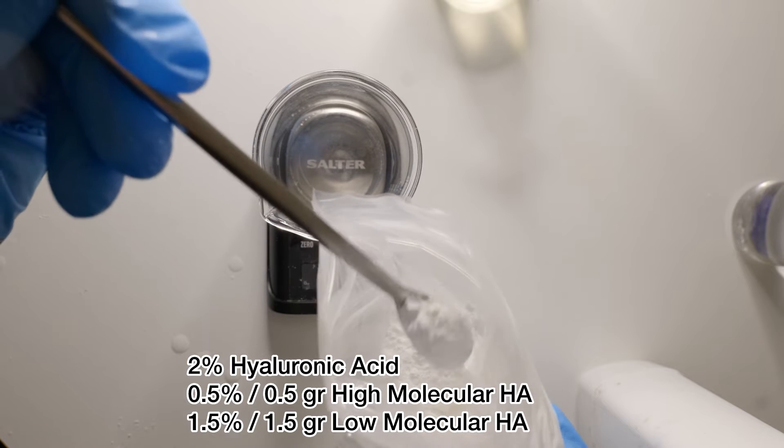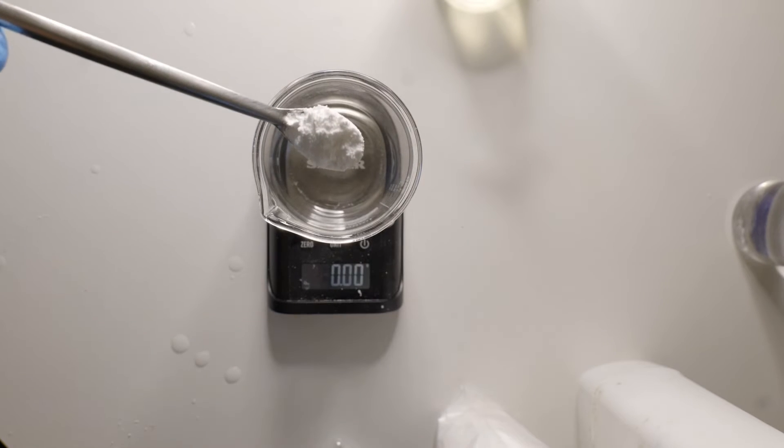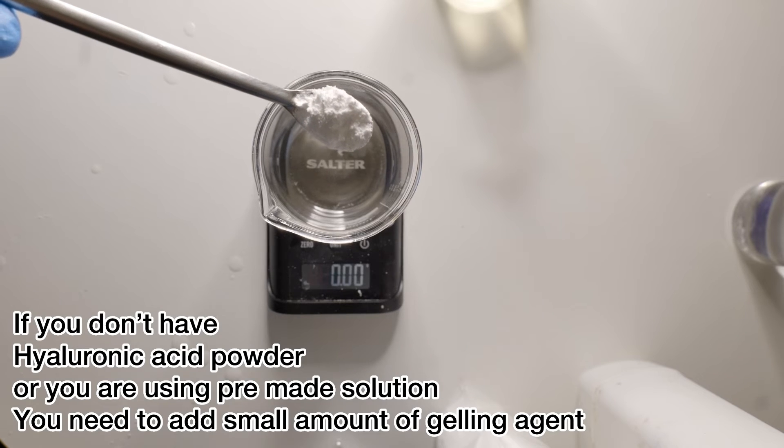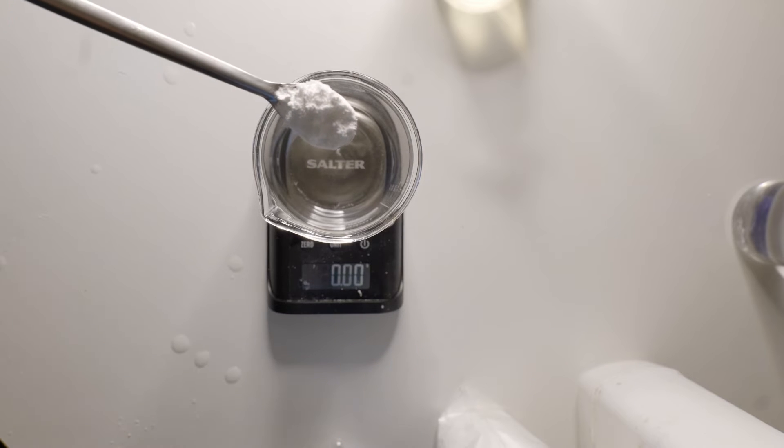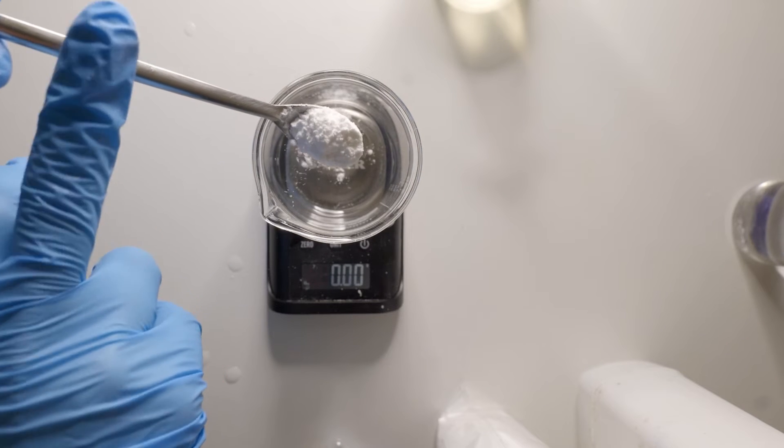In this formulation we're going to add 0.5% high molecular weight hyaluronic acid. The purpose of adding high molecular weight here is to use it as a gelling agent because I'm not adding xanthan gum or something else. However, if you have a solution of hyaluronic acid where it won't gel, you need to add some kind of gelling agent like xanthan gum or something.